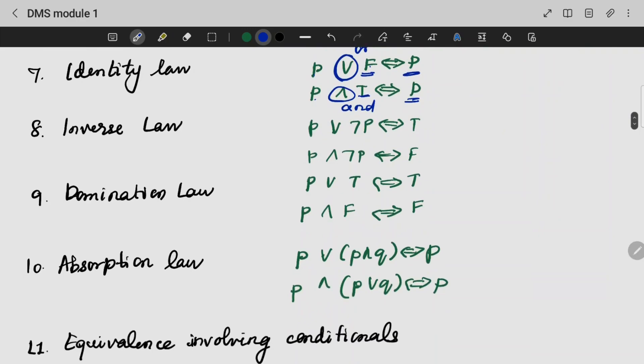Inverse law. P AND not-P will be true and false.